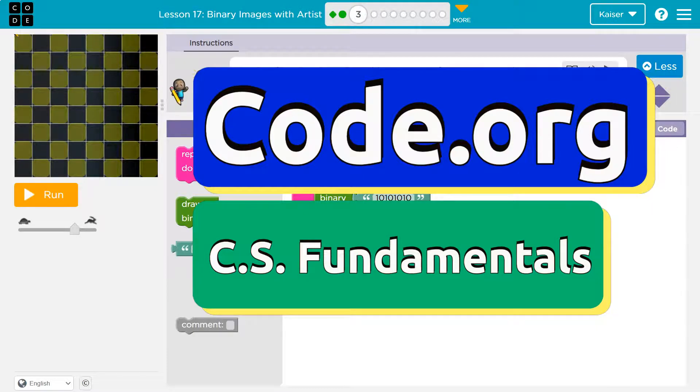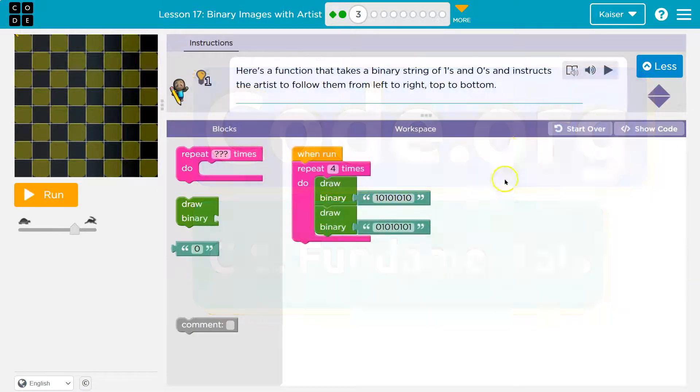This is code.org. Here's a function that takes a binary string of ones and zeros. Keep in mind a string is just like a word or random characters, and instructs the artist to follow them from left to right, top to bottom.